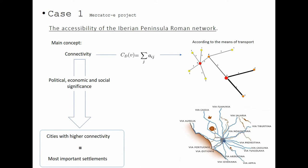This is the first case — the Mercatorre project, which I have been working on most. The main idea is that by analyzing the most simple connectivity of this network, we can identify the most important or significant cities in the territory. The idea is that cities like London, Paris or Rome always have much more infrastructure than small towns in faraway places. Not all connections have the same weight — they depend on the means of transport they represent, whether a major road, a secondary road, a river, or a sea harbor.